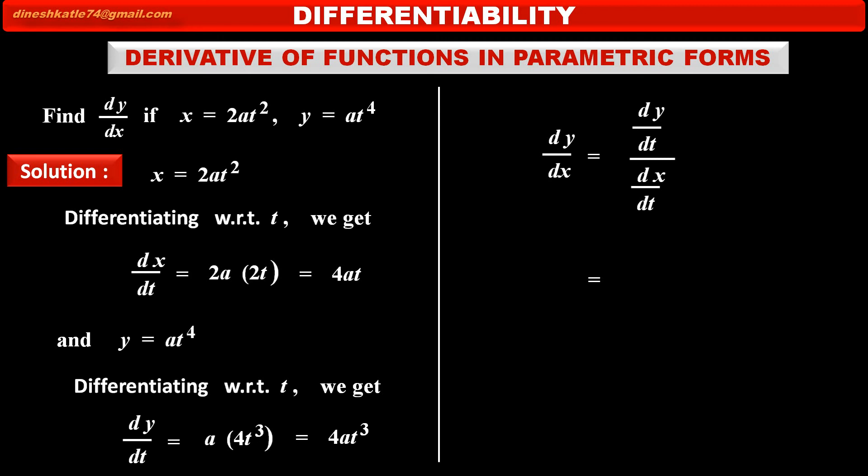We get 4at³ in the numerator, and substituting the value of dx/dt in the denominator, we get 4at.